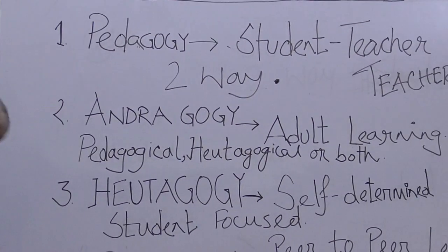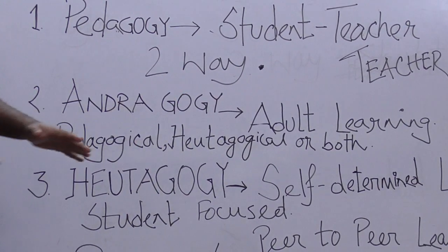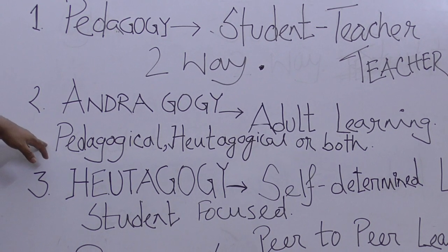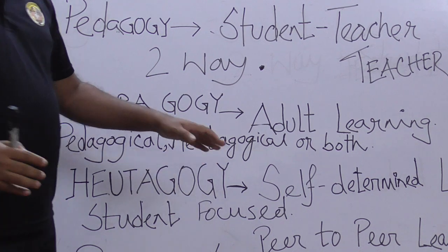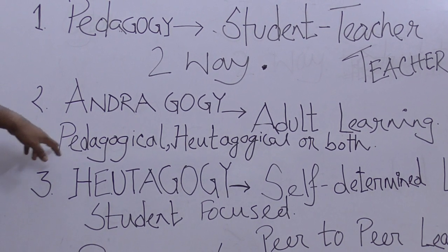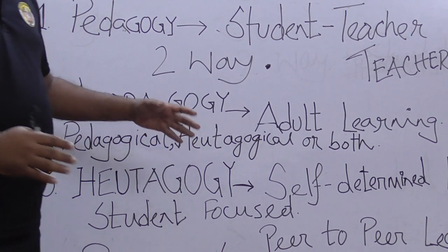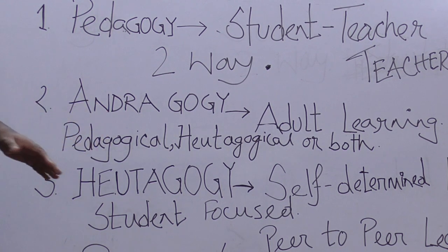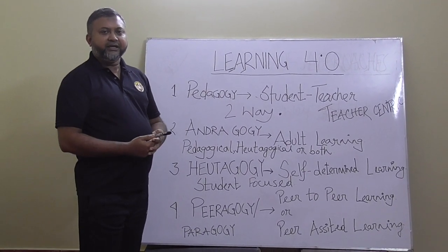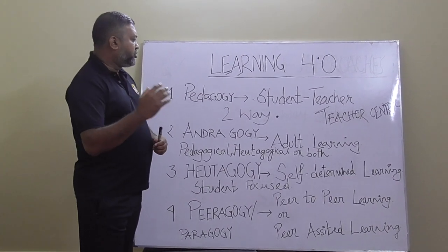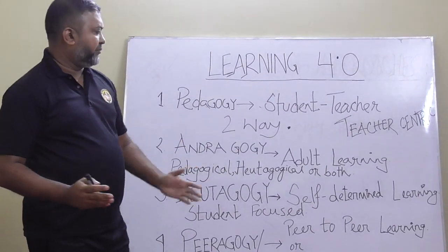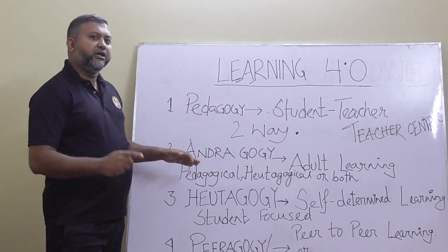The next approach is called andragogy. 'Andra' means adult, 'gogy' means leading — so this is adult learning. Andragogy can be a combination of pedagogy or heutagogy, or both. In adult learning it is always student-centric — the students fix the pace of learning and choose the subject. The teacher guides the students; the teacher is not the main person, the student is. This is called andragogy — teaching adults.